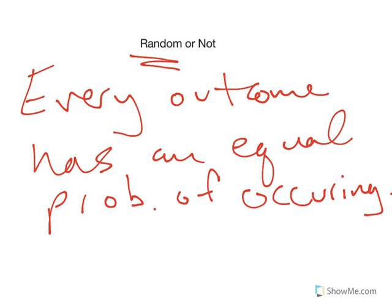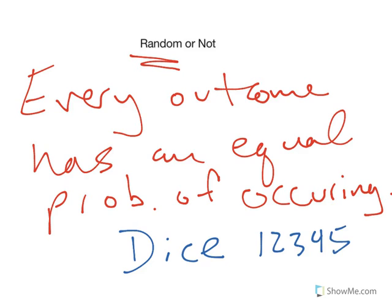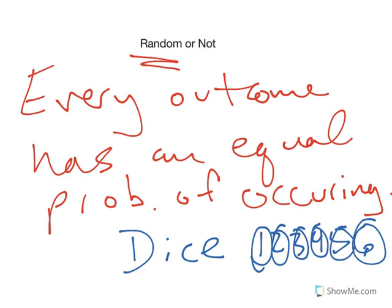The best example of this is dice. If I roll a die, there are numbers on it: one, two, three, four, five, six. If it's a fair die, each of these numbers has an equal probability of coming up. I just so happen to have a die with me, so I'm actually going to roll it. That was a one.